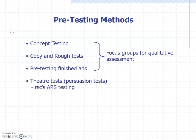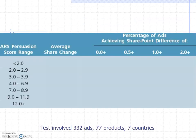One of the most famous services that does this is the ARS testing from RSC. This is a research agency with a proprietary test method. They give scores to ads, and on the left you can see the ARS persuasion score range. This persuasion score is a measure of the pre-test to post-test change in attitude. They have an archive of tests and can benchmark how well ads perform.